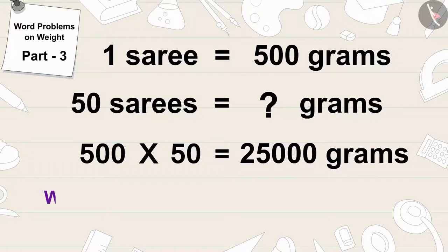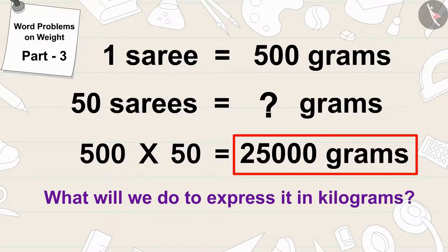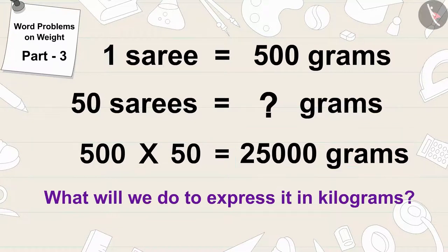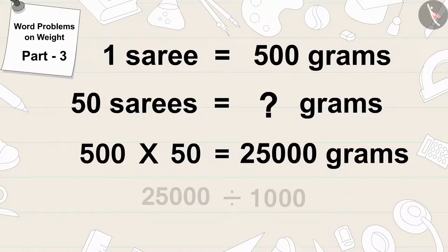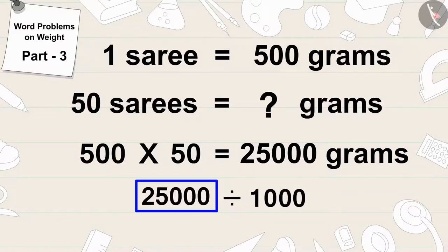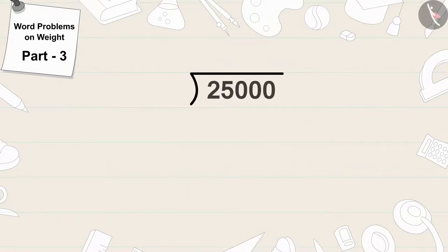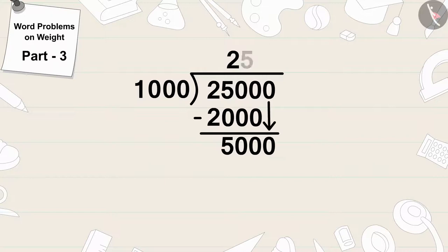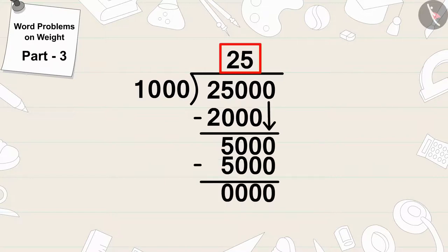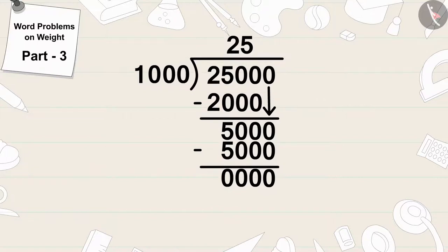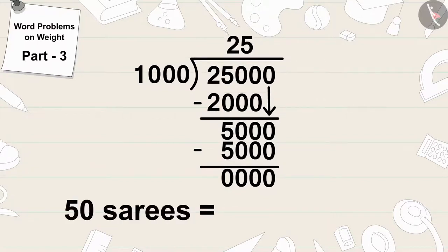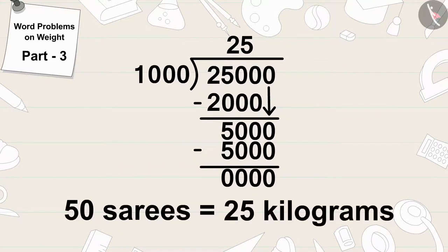Now, what will we do to express it in kilograms? Exactly! We will divide 25000 by 1000. 25000 divided by 1000 is 25. In this way, the total weight of 50 sarees of Banu will be 25 kilograms.